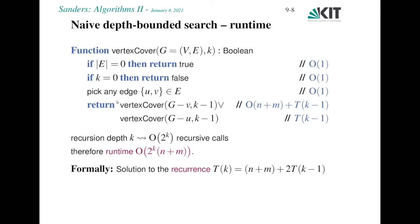More formally, we could also say the running time, or bound on the running time, as a solution to the recurrence T of k is n plus m plus 2 times T of k minus 1, and that also has this solution.